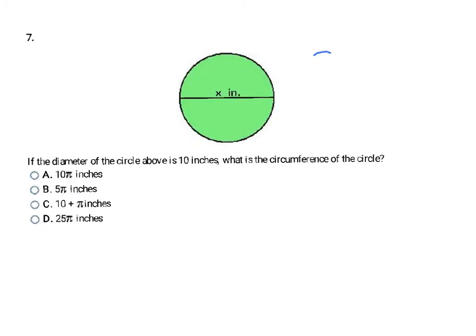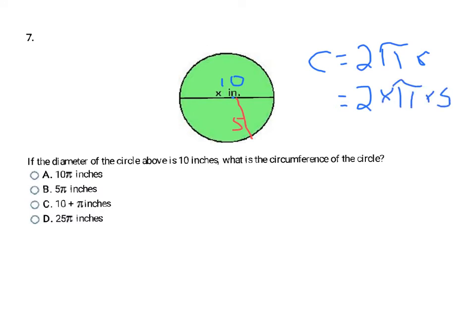The next circle problem uses the same formula C equals 2πR, but this time we're given the diameter equals 10. A diameter goes through the center connecting edge to edge, so it takes two radii to make a diameter. If the diameter is 10, the radius is 5. So: 2 times pi times 5. Multiplying 2 times 5 gives 10, so the circumference is 10π inches. Don't let the diameter trick you into skipping the conversion.